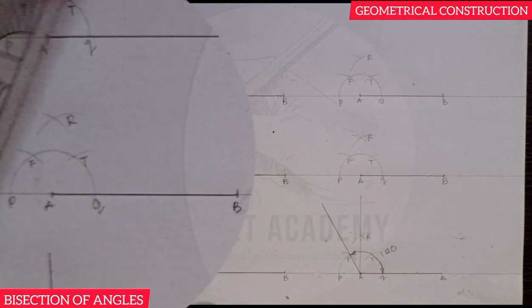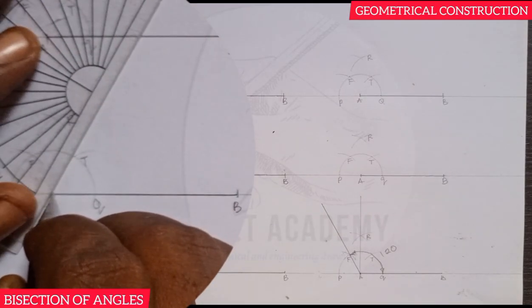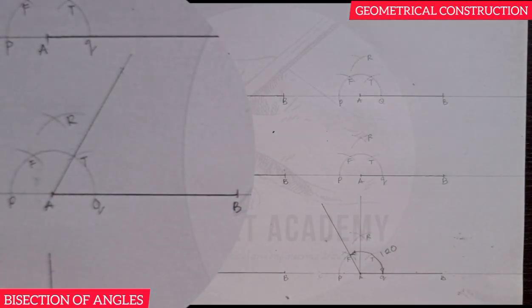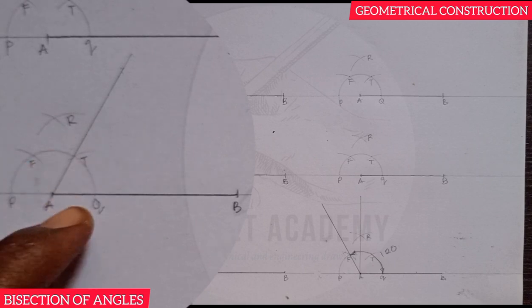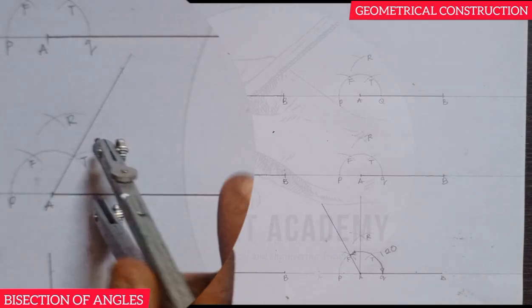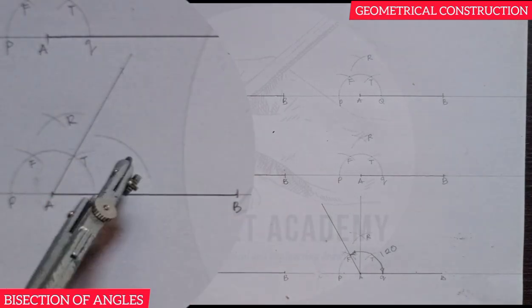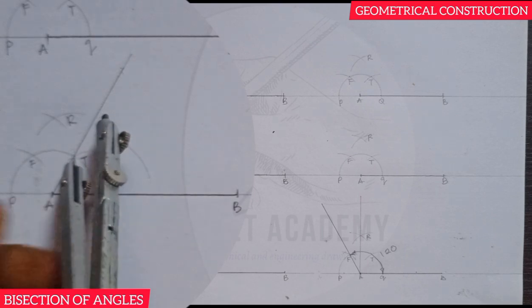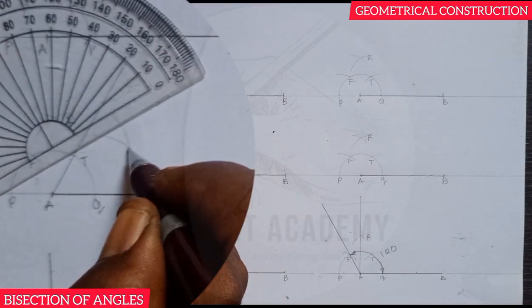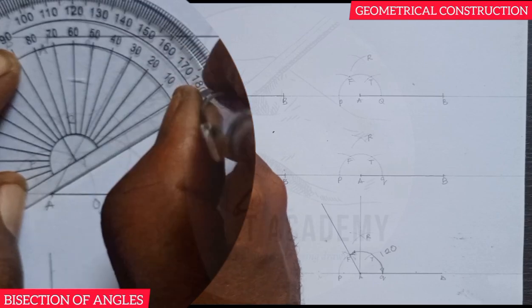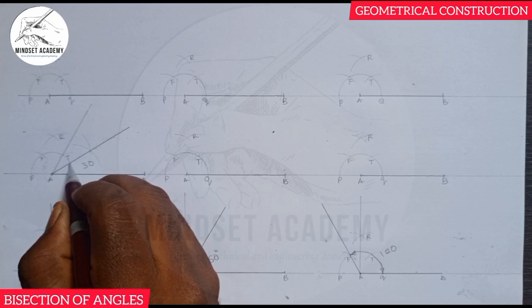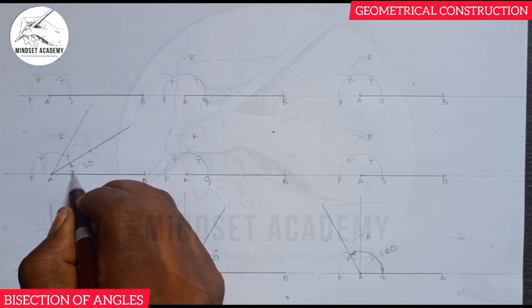Now let's draw 30°. We know the angle from T to Q is 60°, so to get 30° I need to bisect TQ. I place the compass at any radius on Q and strike an arc, then place it on T and strike another arc. Where they meet, I draw a line through that point — that line is 30°. Bisecting 60° gives 30°.